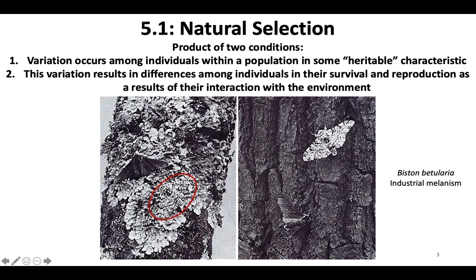This is the Biston betularia industrial melanism example with moths in England, pre- and post-industrial revolution. Pre-industrial revolution, the spotted moth was really common because it allowed it to blend in with lichen growing on trees — it was in higher proportion in the population than the black color morph. Post-industrial revolution, trees lost that lichen and became covered in soot, causing a switch in fitness: the black morphs could blend in more with the bark, while the white ones stood out. You see a change in frequency from mostly white morphs to mostly black morphs.